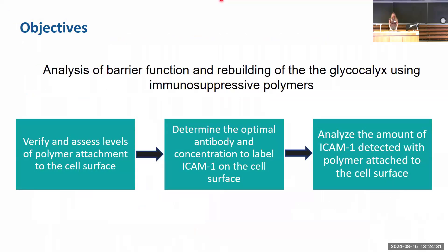Using an immunosuppressive polymer of linear polyglycerol (LPG) with sialic acid, which mimics the natural glycocalyx and suppresses the immune system, the overall research focus was to analyze the barrier function and rebuilding of the glycocalyx using immunosuppressive polymers. This was done through experiments assessing levels of ICAM-1 attachment and polymer attachment to the cell surface, determining the optimal antibody and concentration to label ICAM-1.